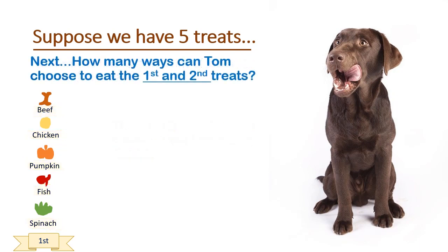Okay, let's take it up a notch. What if he gets to eat two treats? How many ways can he make the choice to eat the first and second treat? Well, this is the tree diagram for counting, and we officially have our first branch. If Tom chooses to eat the beef treat first, he can choose to either eat the chicken, the pumpkin, the fish, or the spinach treat second.